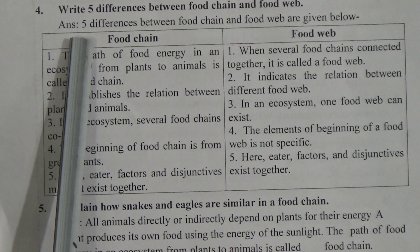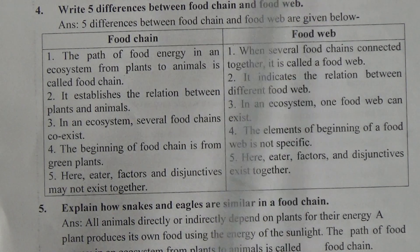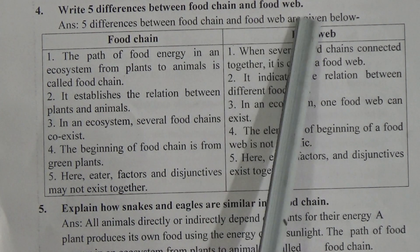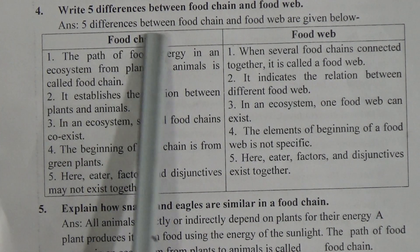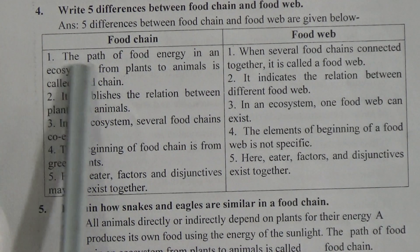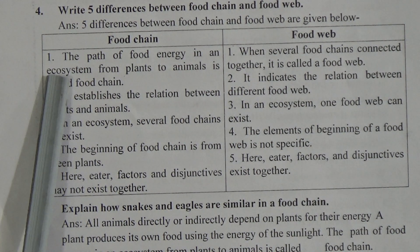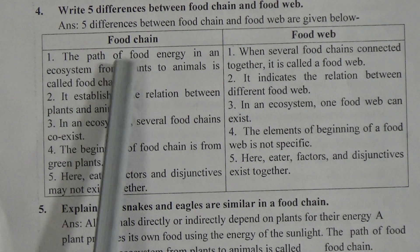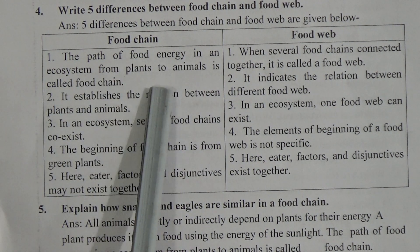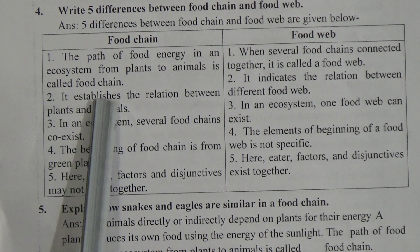CBQ 4: Write 5 differences between food chain and food web. The 5 differences between food chain and food web are given below. Number one — Food chain: The path of food energy in an ecosystem from plants to animals is called a food chain.